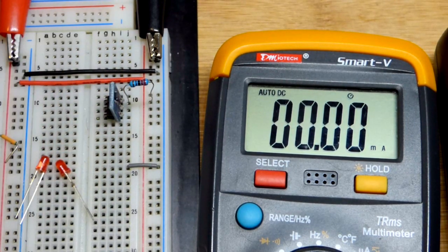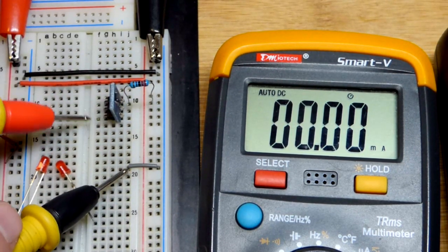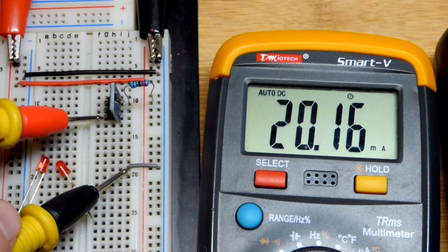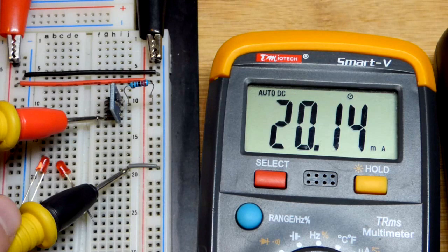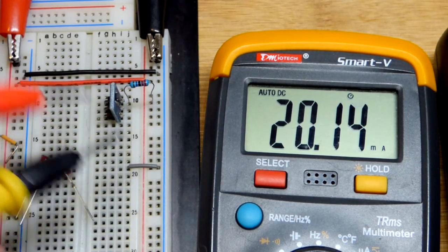There we go, plugged in the opposite direction. Now you're going to see that this resistor does not limit it below 20 milliamps, so right now the power supply is limiting the current.